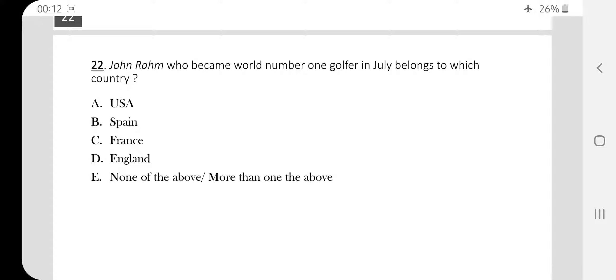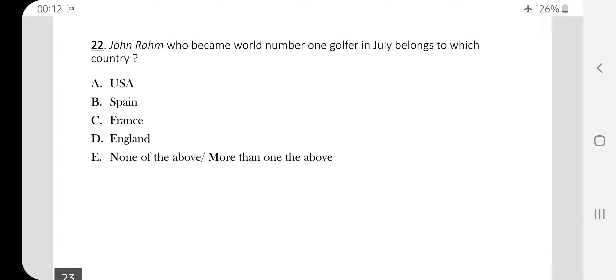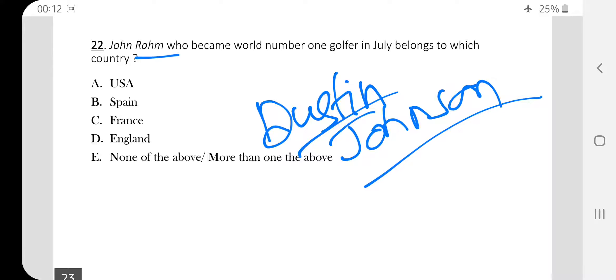Question number twenty two. John Rahm who became world number one golfer in July belongs to which country? John Rahm belongs to Spain. He became number one in golf in July. Not necessarily that he is still number one. For number one you have to check currently before the exam. Presently, Dustin Johnson, who is from the US. So Dustin Johnson and John Rahm are two players' names we are telling here related to the field of golf.